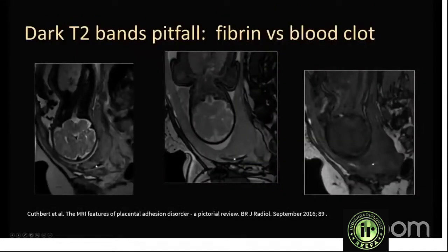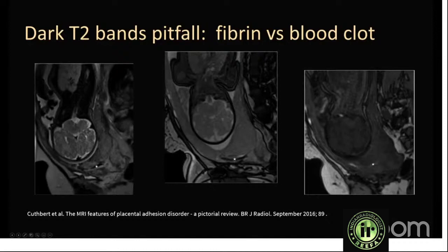Cudbert et al. 2016 illustrated another pitfall: dark areas on T2-weighted sagittal and coronal images resembling dark intraplacental bands. However, on the balanced gradient echo image, bright signal was seen in that region. The T1-weighted sequence helped clarify that this was actually a recent hemorrhage, not a dark intraplacental band — avoiding a miscall of placenta creta. T1 sequences are therefore important in evaluating these areas.